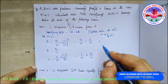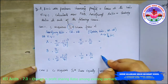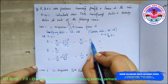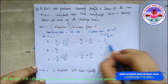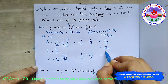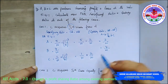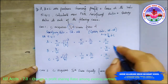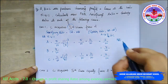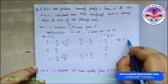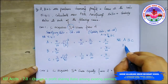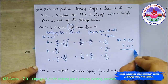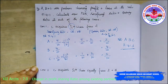So A's new share is 5 minus 2 = 3/10. B remains at 4/10. C's new share is 3/10. Therefore, the new ratio among A, B, and C is 3:4:3. This is the answer for Case 1.